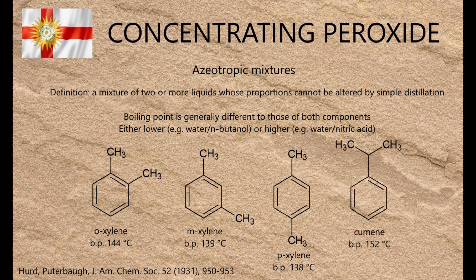Hurd and Poonterbohr's original procedure used cumene, which is isopropyl benzene, instead of xylene, which is dimethyl benzene, but cumene is as rare as hen's teeth to the amateur chemist. Xylene achieves a similar result and is readily available in the form of paint stripper. Toluene will work as well but it's not as efficient — the solvent to water ratio is 80:20 rather than 60:40.